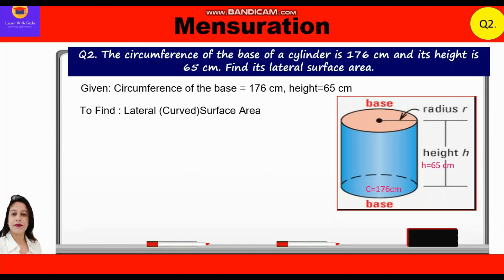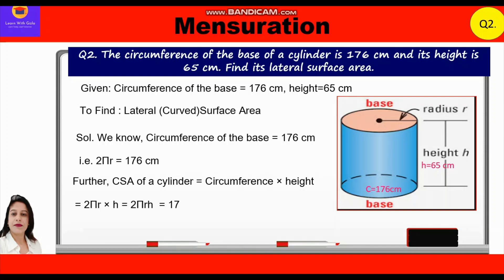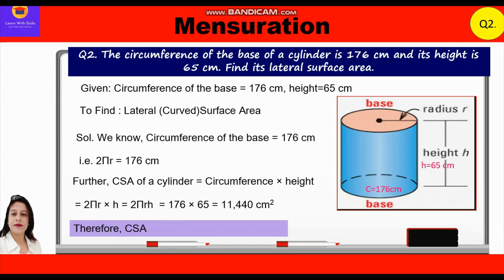We know the circumference of the base equals 176 cm, that is 2πR = 176. The curved surface area of a cylinder equals circumference × height, or 2πRh. Substituting the values: 176 × 65 = 11,440 cm². So the lateral surface area is 11,440 cm².